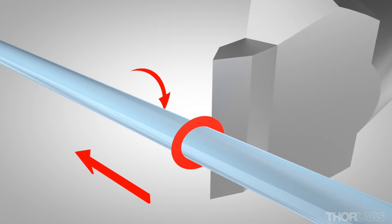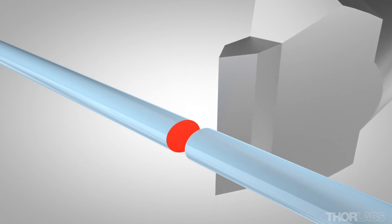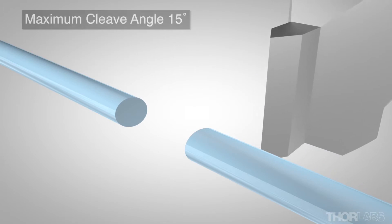When the blade strikes the fiber, the crack propagates across the cleave plane and results in an angled cleave.